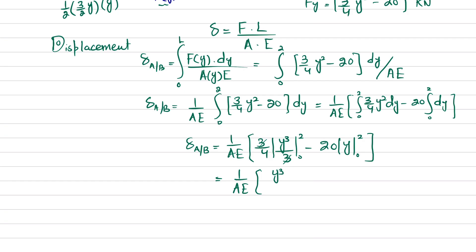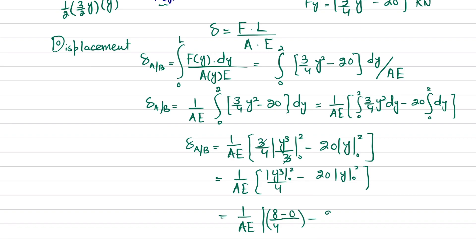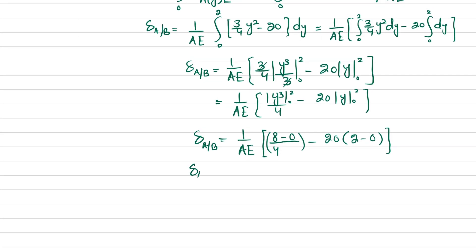Substituting the limits: y³/4 from 0 to 2 gives 8/4 minus 0, which equals 2. And 20·y from 0 to 2 gives 20 times 2 equals 40. So we get 1/(A·E) times (2 minus 40), which equals minus 38 divided by A·E kilonewton-meters.